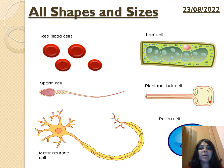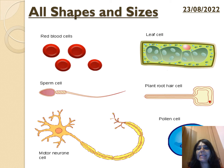Here we have the nerve cell — it's a large structure with a large surface area, with the nucleus and dendrites. Then here we have the root hair cell, which has a large surface area and is quite long in order to absorb minerals, nutrients, and water from the soil. The final one is a pollen cell.